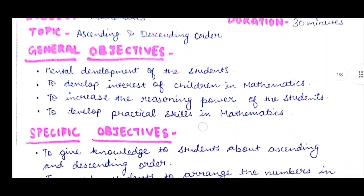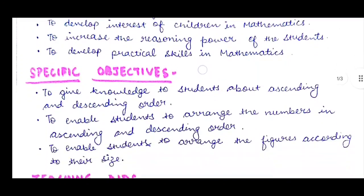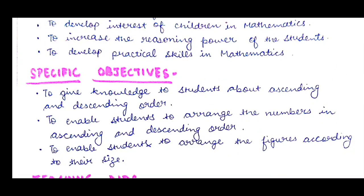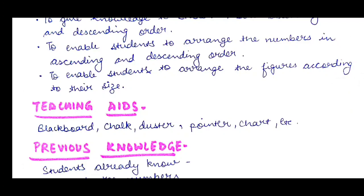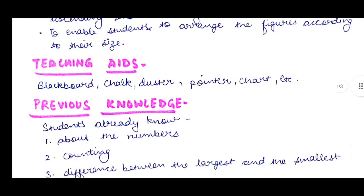We will write general objectives. Our general objectives are: mental development of the students, to develop interest of children in mathematics, to increase the reasoning power of the students, to develop practical skills in mathematics. Then our specific objectives: to give knowledge to students about ascending and descending order, to enable students to arrange numbers in ascending and descending order, to enable students to arrange figures according to their size. For teaching aids, we need blackboard, chalk, duster, pointer, chart, etc.